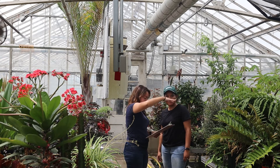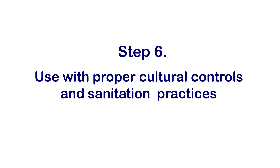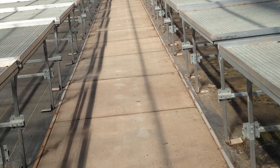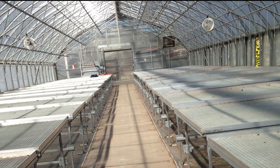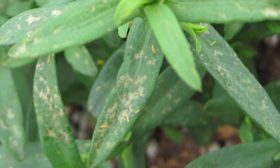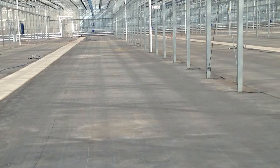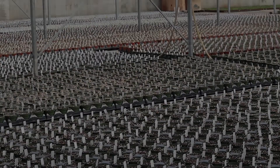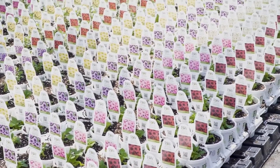Be diligent and patient — it takes time to develop a successful program. Use biological controls with proper cultural controls and sanitation practices: start clean and stay clean. Remove pest plants and weeds, discard heavily infested plants, keep garbage cans covered, and allow a fallow period with the greenhouse completely empty of plant material for at least 4 weeks to help reduce pest pressure for the spring growing season.